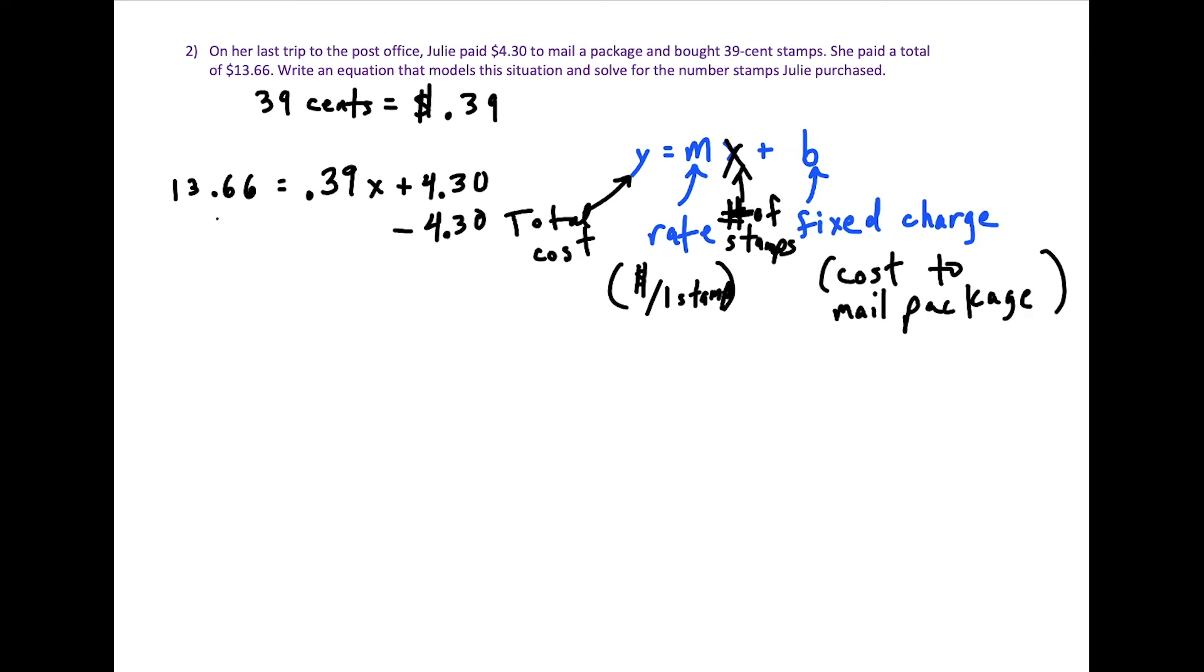So the rest now we just solve this basic equation. We have minus 4.30 on both sides. And now we have 0.39x. We could use a calculator here, but the subtraction isn't so bad. So we have 6, 3, and then 13 minus 4 is 9. So we just bring down the decimal.